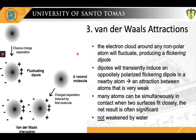To illustrate further, the electron cloud around any non-polar atom will fluctuate, producing a flickering dipole. Such dipoles will transiently induce an oppositely polarized flickering dipole in a nearby atom. This interaction generates an attraction between atoms that is very weak, but since many atoms can be simultaneously in contact when two surfaces fit closely, the net result is often significant. Please note that van der Waals attractions are not weakened by water.